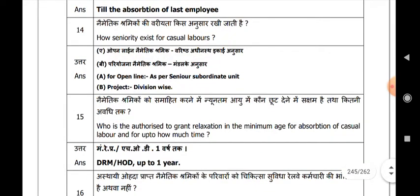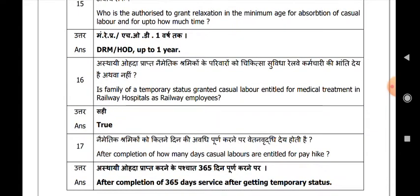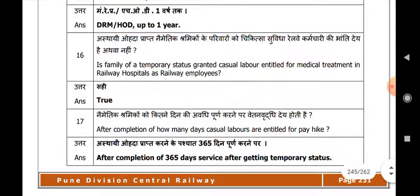Who is authorized to grant relaxation in the minimum age of absorption of casual labour, and for up to how much time? DRM or HOD, up to one year. Is the family of a temporary status granted casual labour entitled for medical treatment in the railway hospital as a railway employee? True.